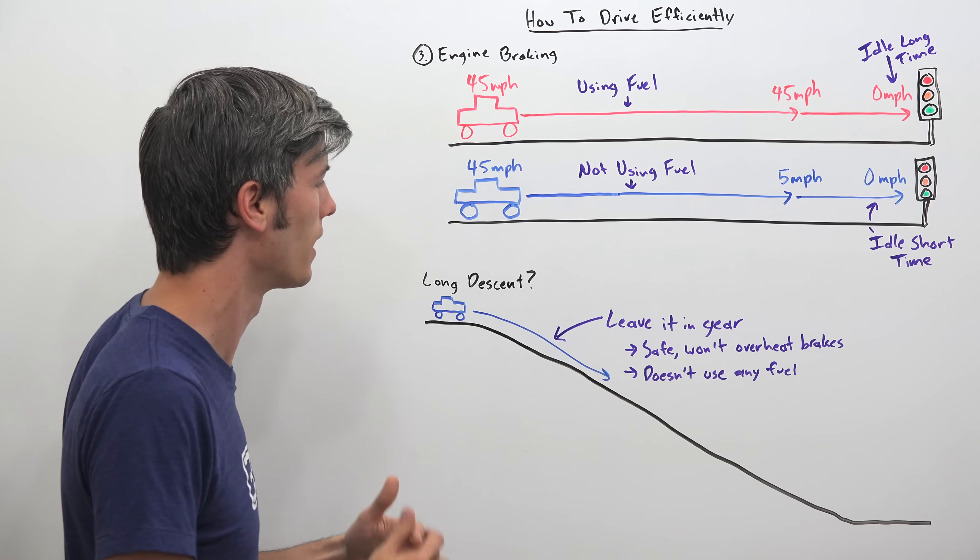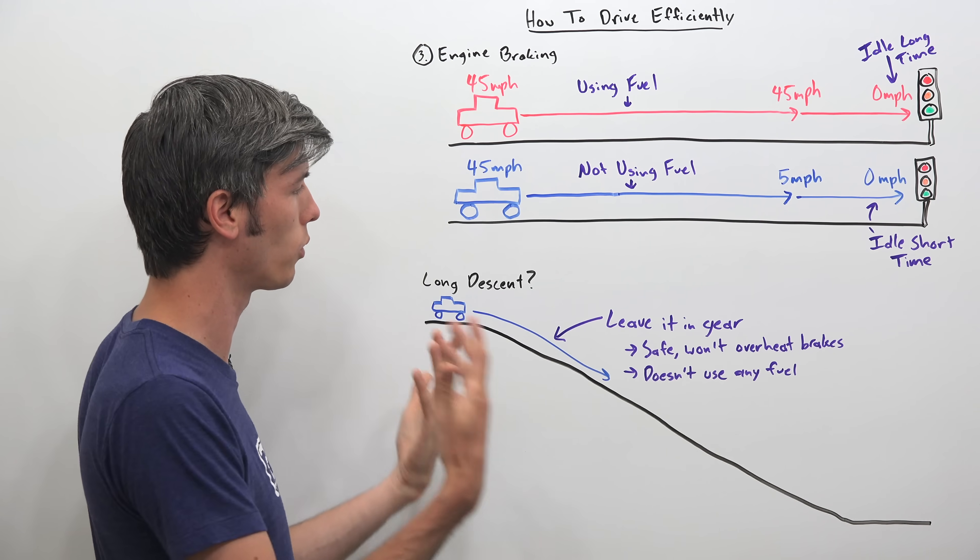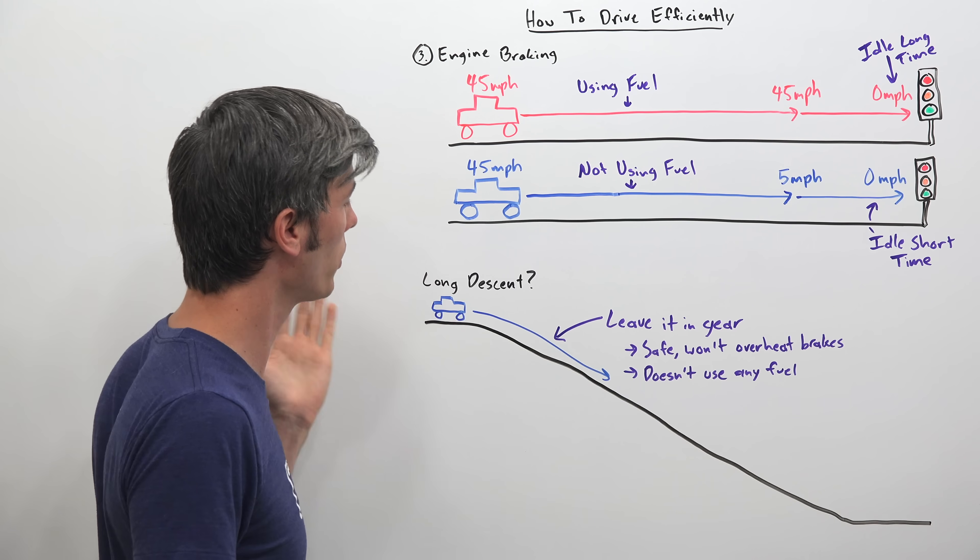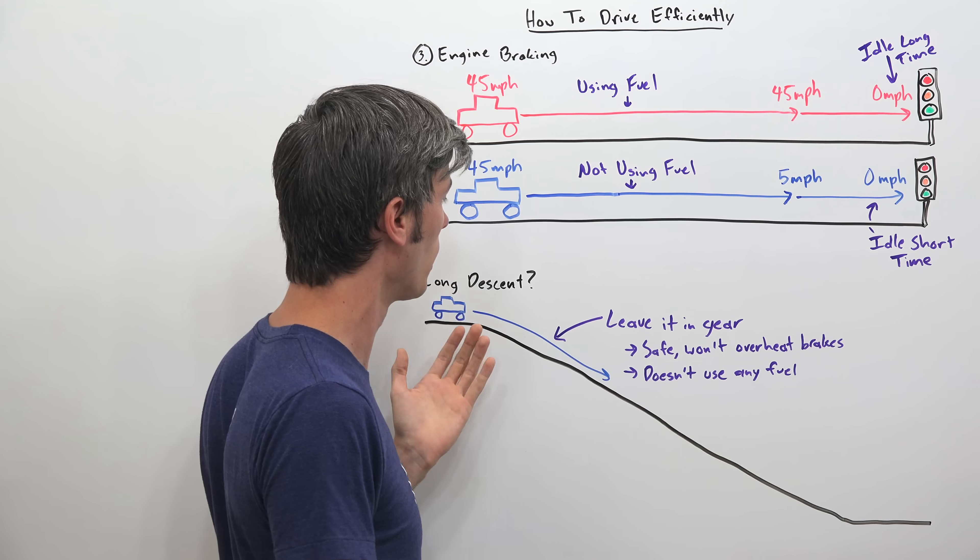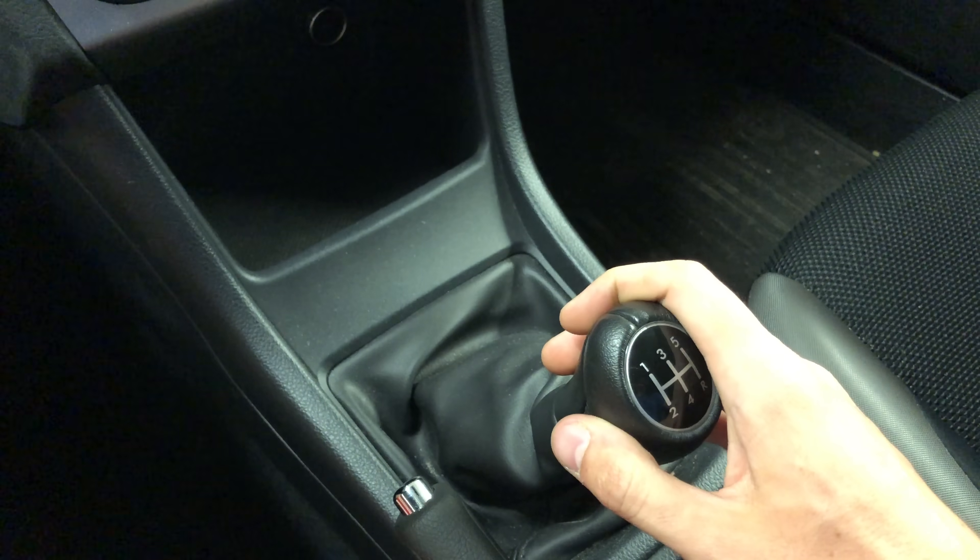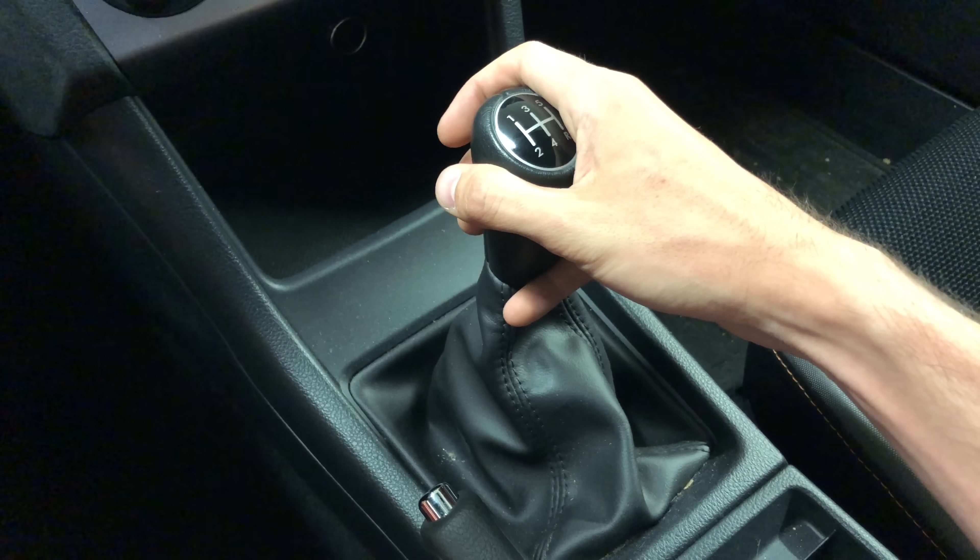That's why engine braking is recommended going downhill. But you also won't be using any fuel if you have it in gear. And you're using engine braking to decelerate or maintain your speed as you go down a hill.